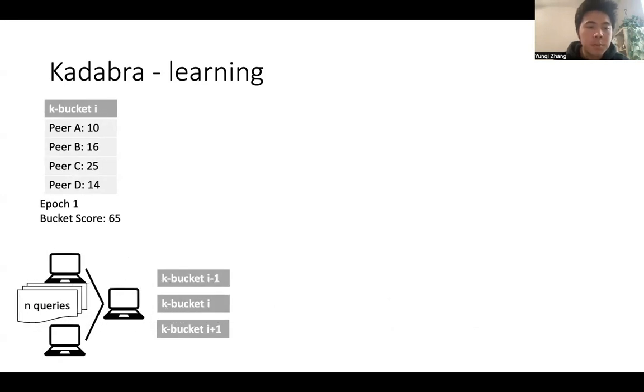After n queries, which means we have an epoch. We are here at the second epoch. And since this is an exploitation epoch, we use the same configuration, we still have peer A, B, C, and D.